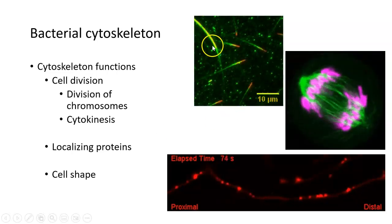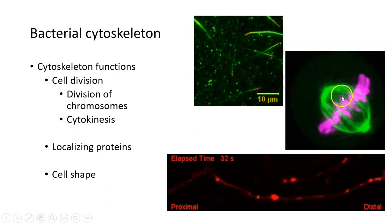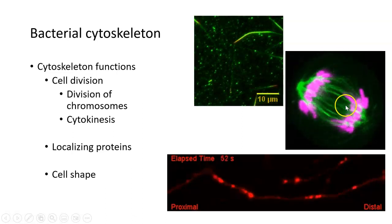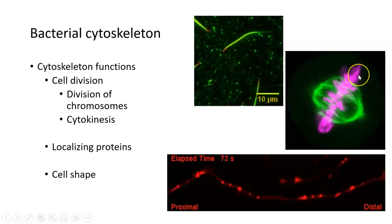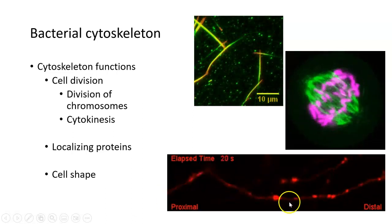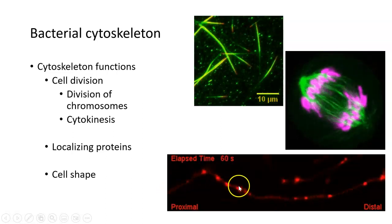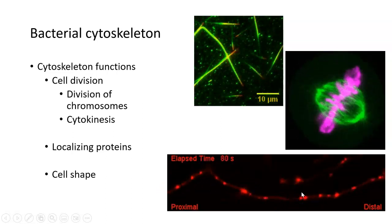You can actually see some of those cytoskeletal filaments up here in green. In this image here, the pink are chromosomes and the cytoskeleton is green. You can see it pulling apart those chromosomes during cell division. And here you can see proteins marked in red moving along a track, and that track is made up of cytoskeleton.